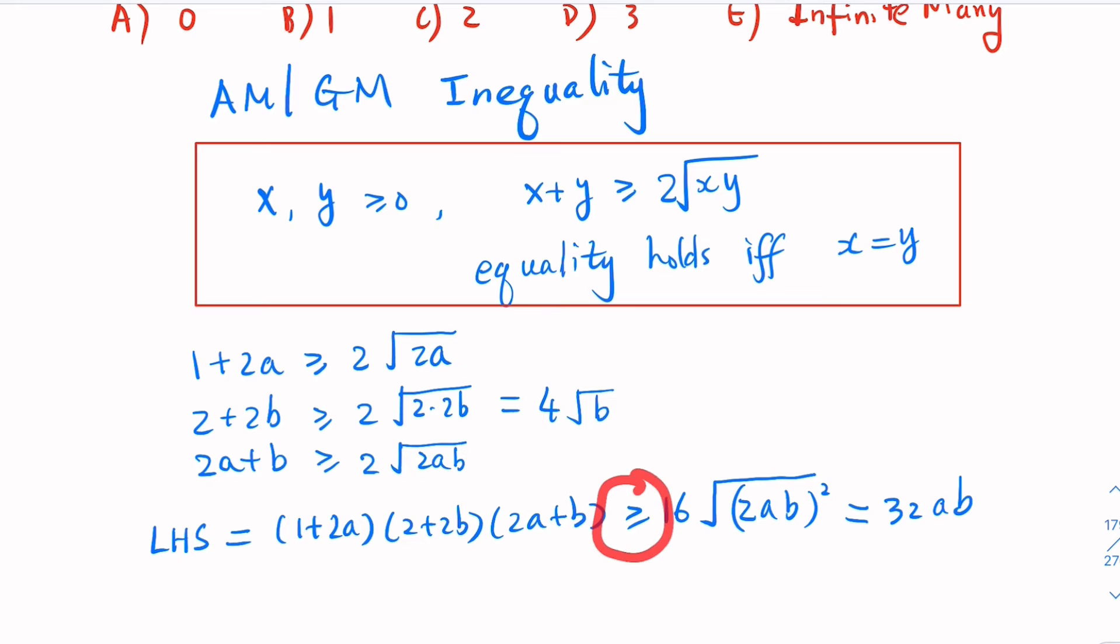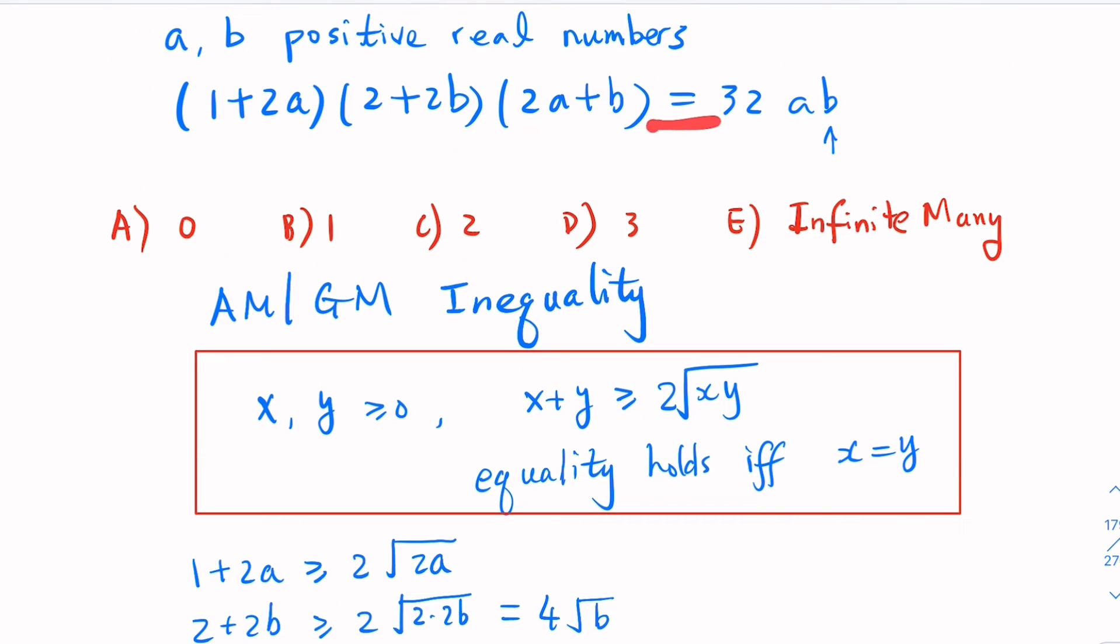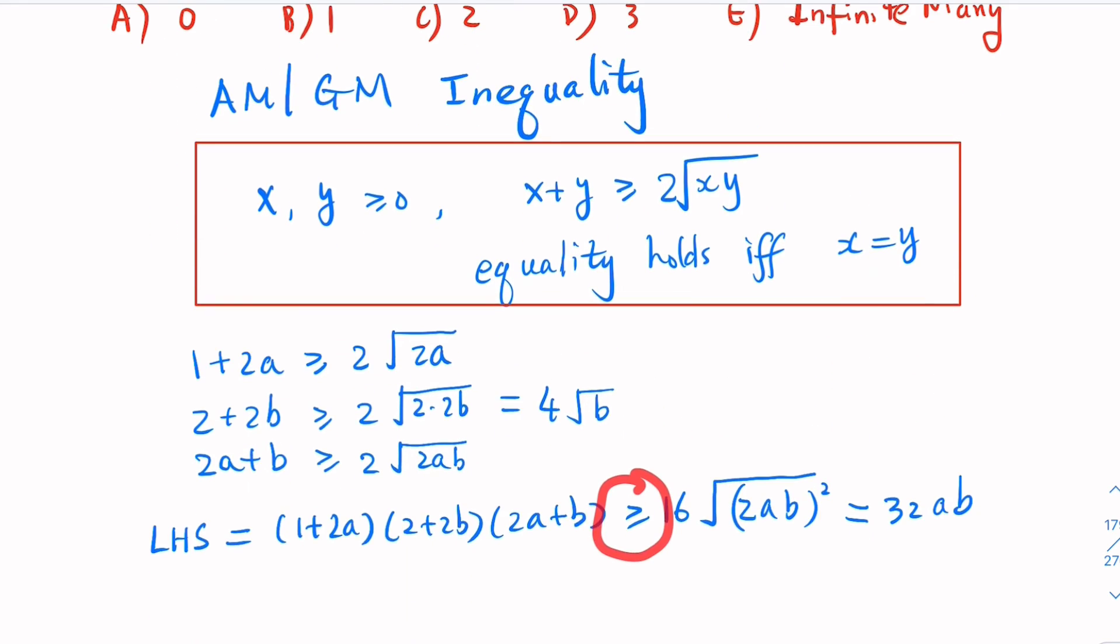But the equation is an equality. So when the equality holds, we need the equality to hold for all three inequalities. The condition is, if and only if, the two numbers in each inequality equal each other. So 1 = 2A.